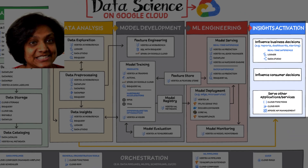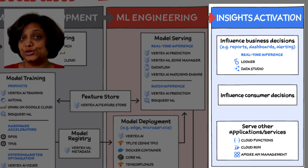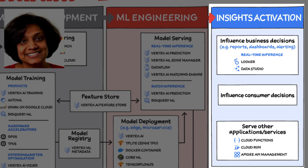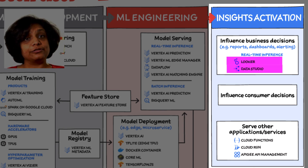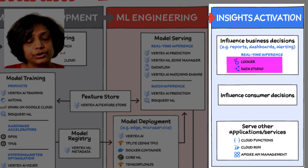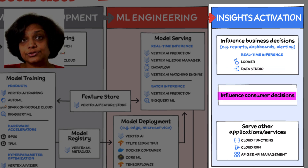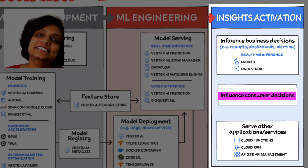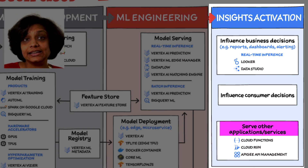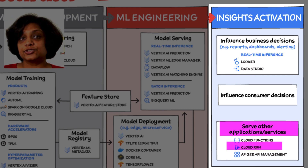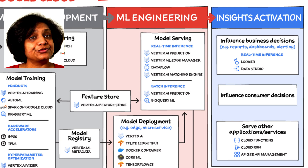Fifth is insights activation. The insights activation stage is where your data has now become useful to other teams and processes. You can use Looker and Data Studio to enable use cases in which data is used to influence business decisions with charts, reports, and alerts. Data can also influence customer decisions and as a result increase usage or decrease churn. Finally, data can also be used by other services to drive insights — these services can run inside Google Cloud on Cloud Run or Cloud Functions, or outside Google Cloud, connecting via Apigee API management.